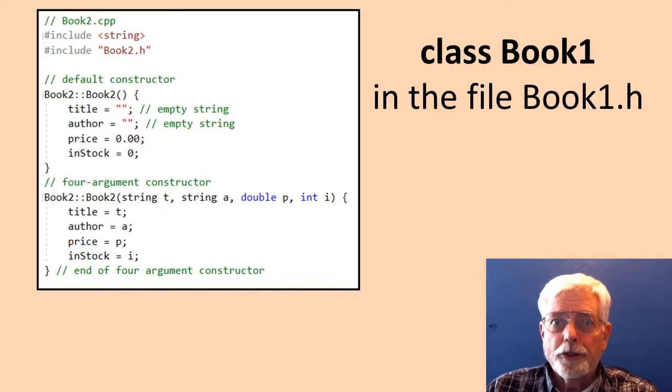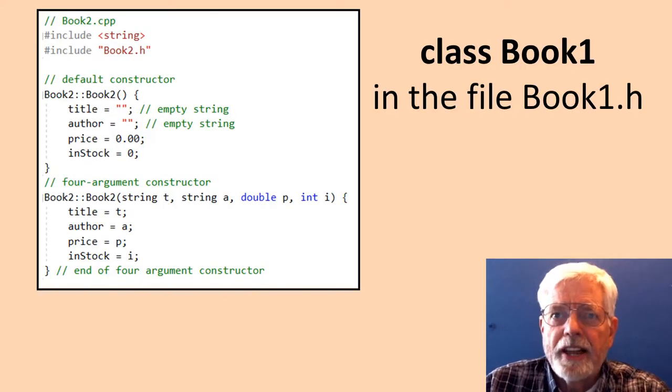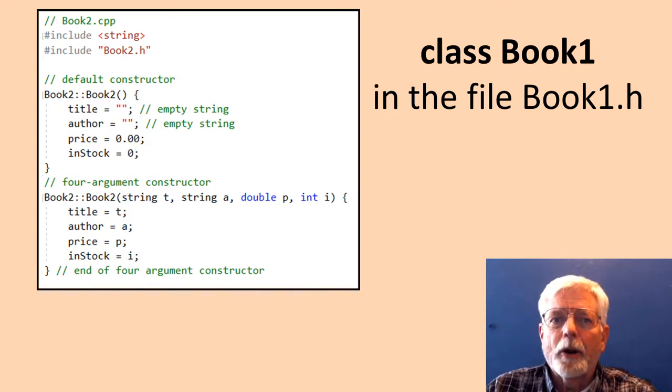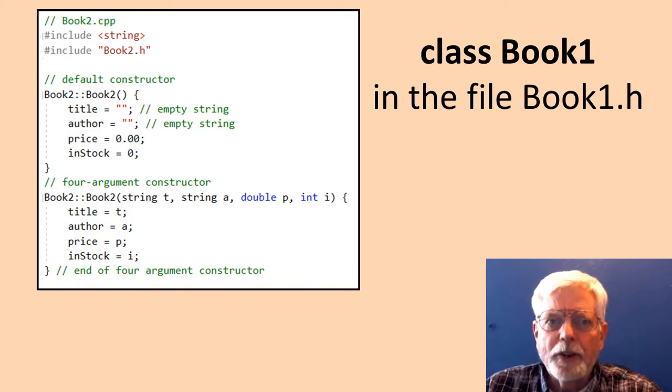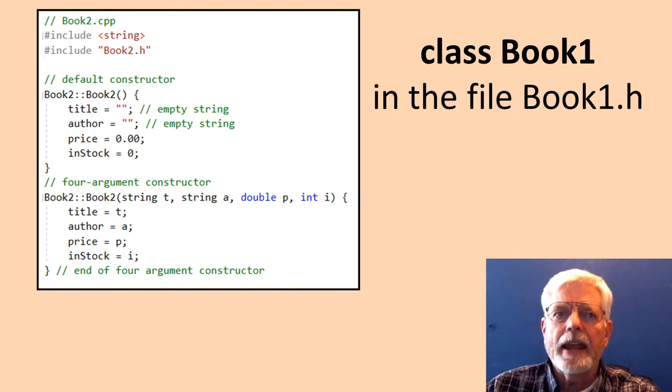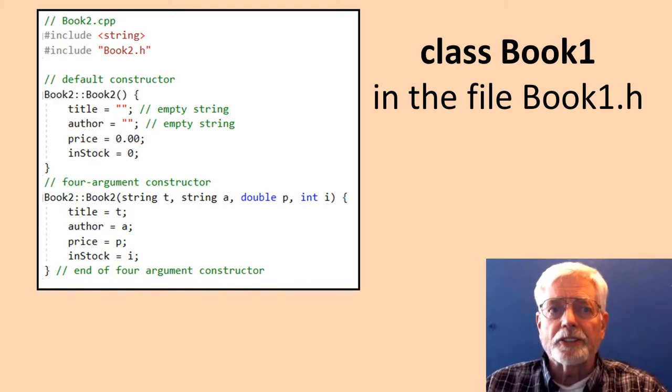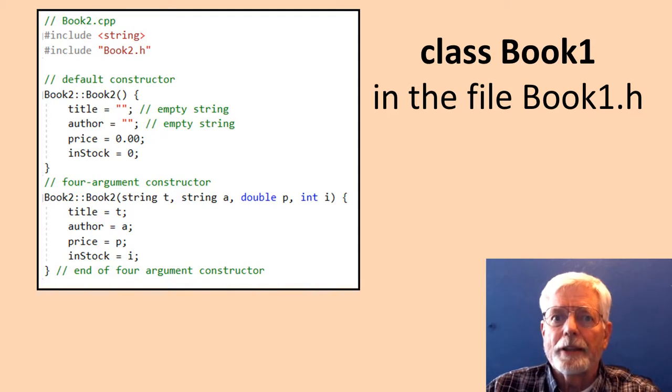Since I am adding more features to the Book1.h class definition that was discussed in Part 1, I am going to name the updated version Book2.h so that I won't get confused. I am also going to create a separate C++ project and name it Book2 test. Before developing the new version of class Book, I want to review just a few things about the old version.